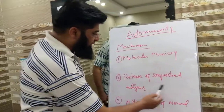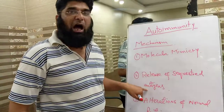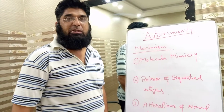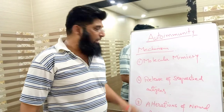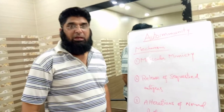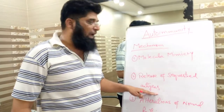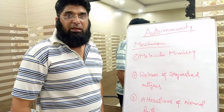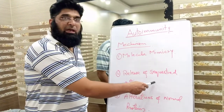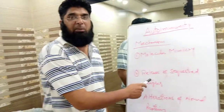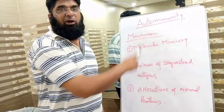The second mechanism is release of sequestered antigens. Sequestered antigens are those antigens which remain unrecognized by the immune system during the development of the body. The best example is male sperms. During development of the immune system, these sperms remain unrecognized; when in adult life they become exposed, the immune system recognizes them as non-self antigens and autoimmunity develops.